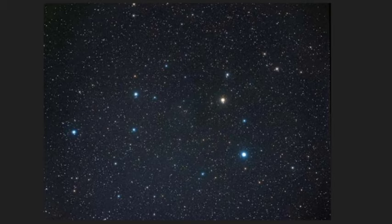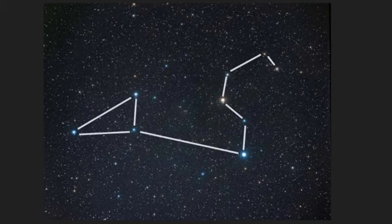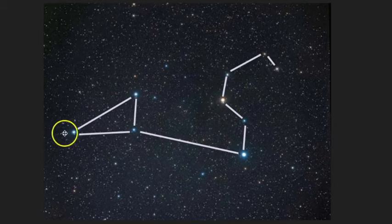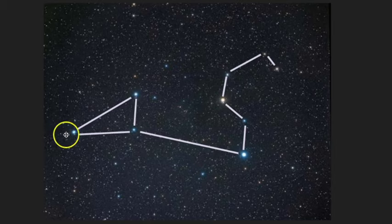If we trace out the pattern of what Leo would look like in the sky with lines, you would have that backwards question mark, also known as the sickle, and then the triangle hind quarters. Keep in mind that depending on whichever source or book you consult, this pattern can vary.